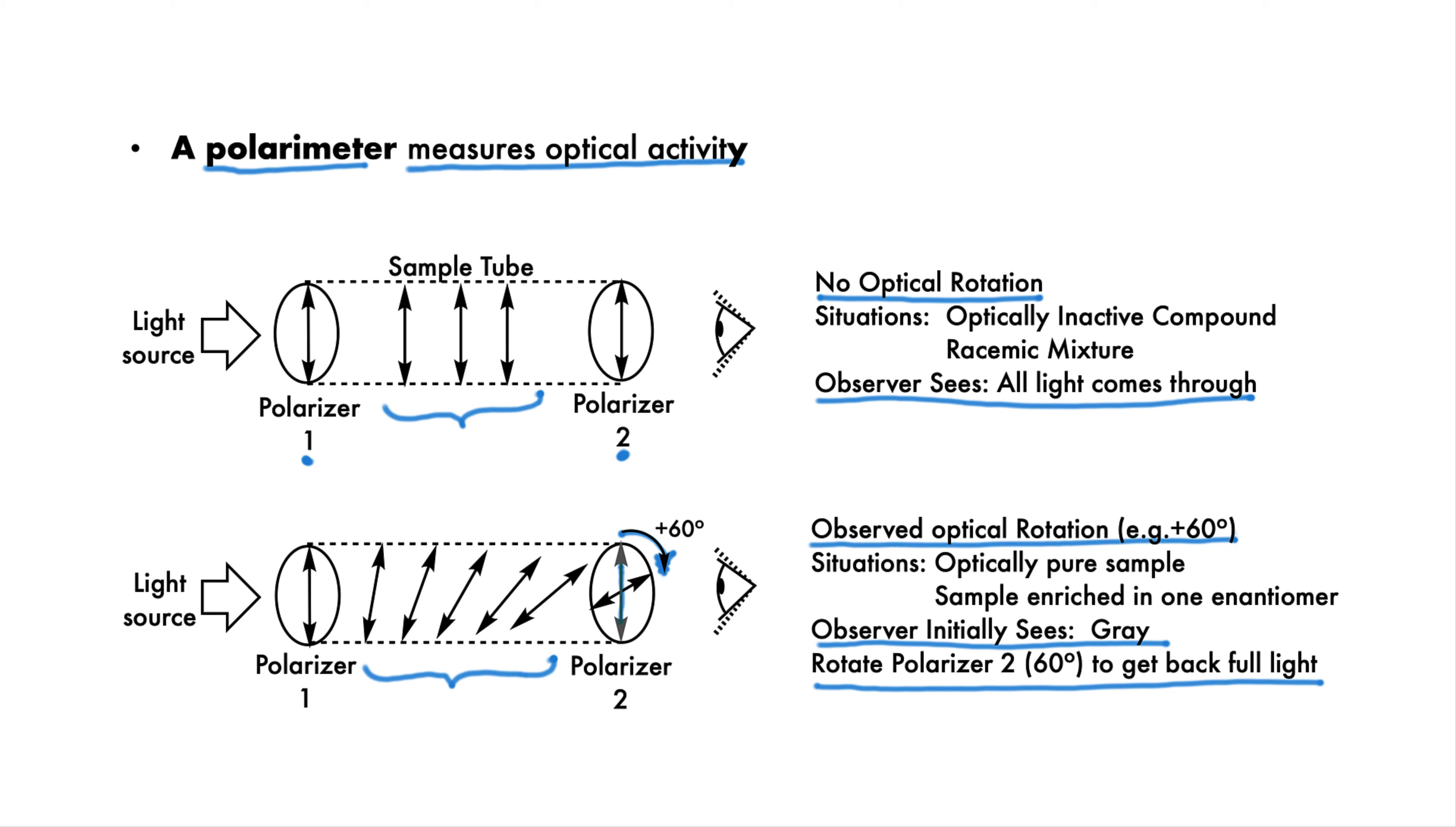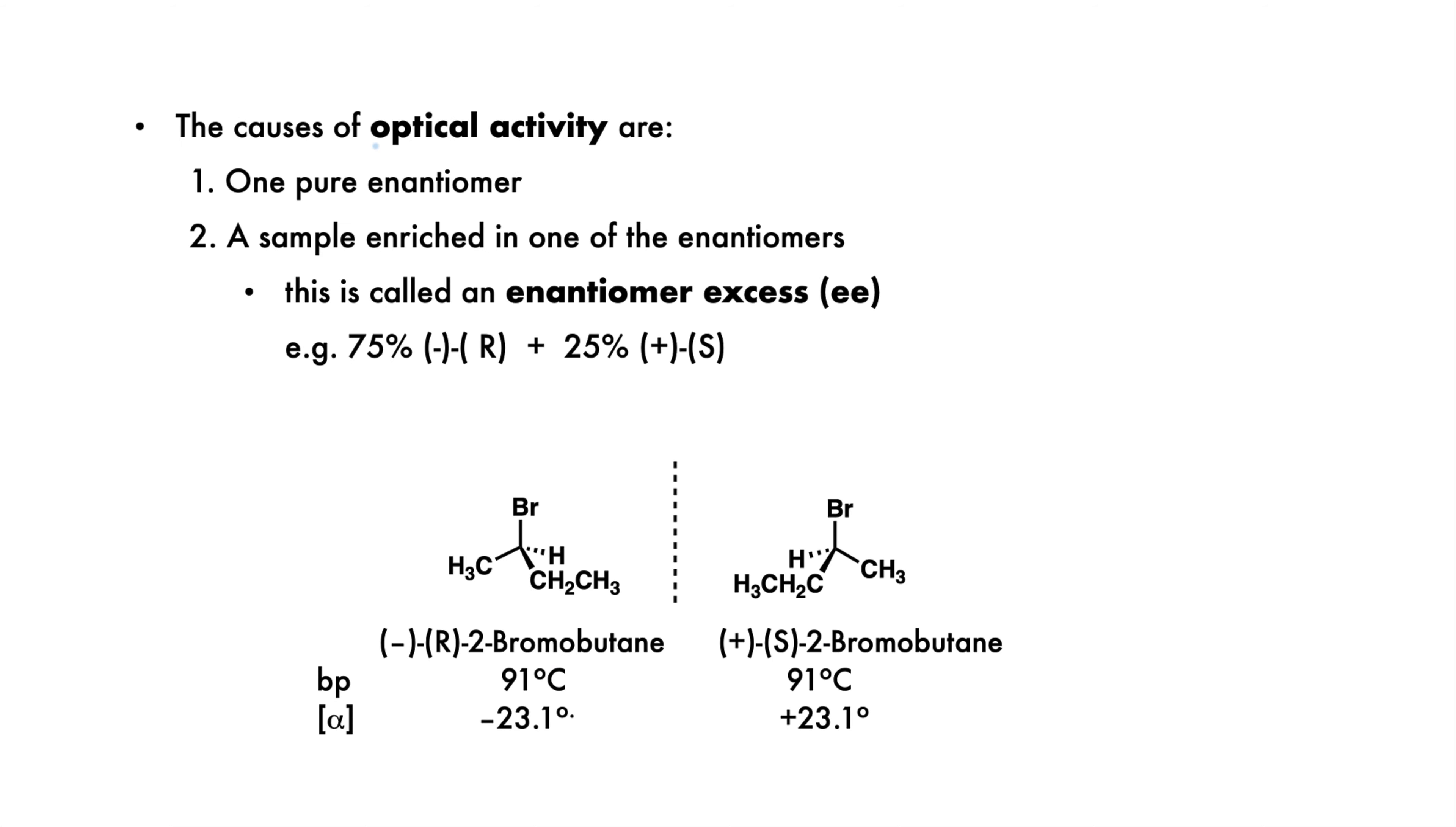Now, let's discuss the actual causes of optical inactivity and activity. There are two causes of optical activity. The first is a sample tube containing a pure enantiomer. If we have a sample of pure R-2-bromobutane, we will get an optical rotation of minus 23.1 degrees. And if we have a pure sample of the S enantiomer, we would get an optical rotation of plus 23.1 degrees. Notice that all other physical properties of the two enantiomers, such as the boiling point, would be exactly identical.